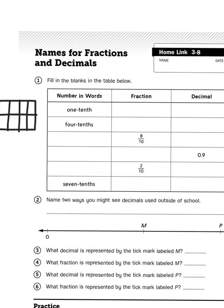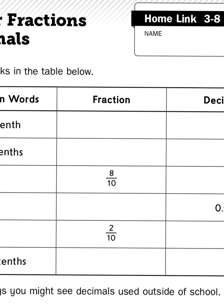Now, when I write 1 tenth as a fraction, I put the numerator, the number of parts shaded in, on top, and then I put the denominator, the total number of parts, on the bottom, like so.